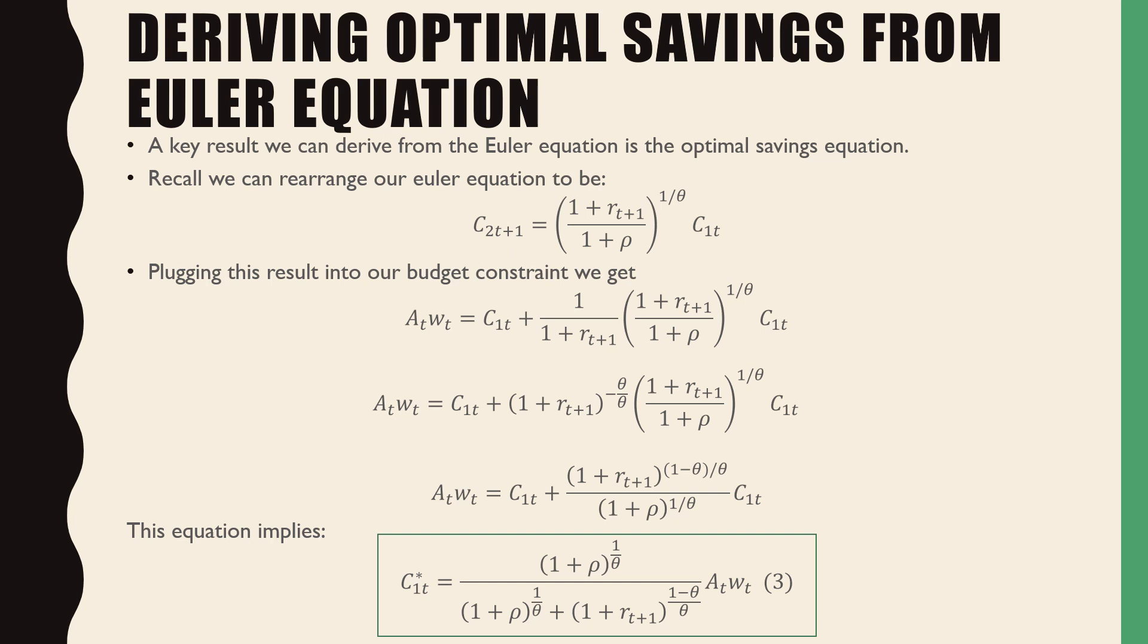If we were to take this and plug it into our budget constraint we get an interesting result. The optimal consumption when young is equal to 1 plus ρ raised to the power of 1 over θ all over 1 plus ρ raised to the power of 1 over θ plus 1 plus rt+1 raised to the power of 1 minus θ all over θ times AtwT.